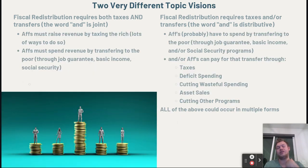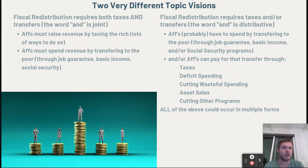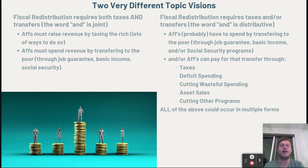If fiscal redistribution requires both taxes and transfers, then affirmatives have to do two things in every single plan: first, raise revenue by taxing the rich, and second, spend that money by transferring it to the poor or middle class through a jobs guarantee, basic income, or social security expansion program. Whereas the second version says affirmatives probably have to spend by transferring to the poor, and/or they can pay for that transfer through a whole bunch of mechanisms — taxes, deficit spending, cutting wasteful spending programs, or selling assets owned by the federal government.